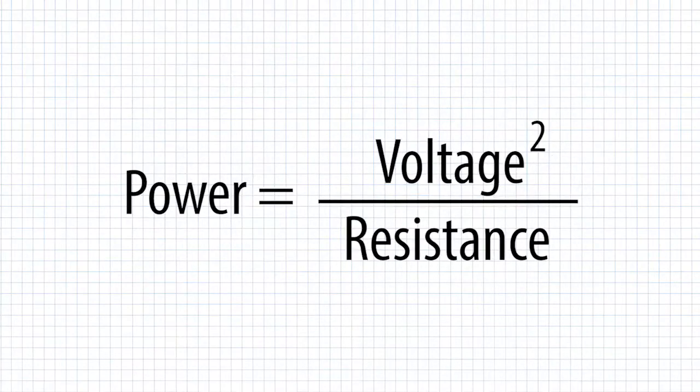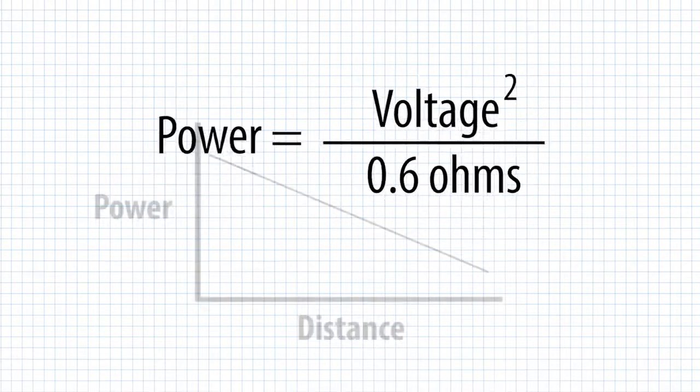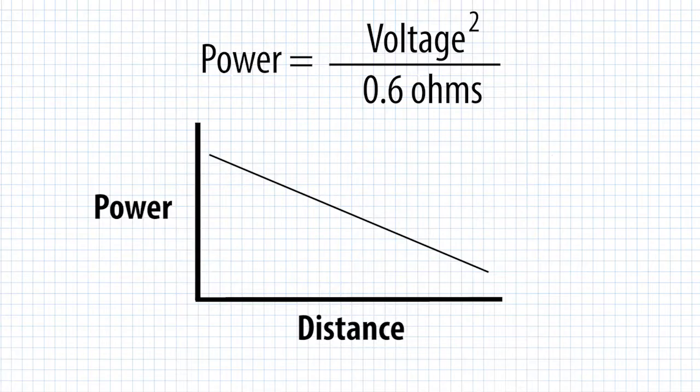After you've recorded all your data, calculate the power at each distance by using the formula power equals voltage squared divided by resistance. For resistance, you can use 0.6 ohms. Now graph the power values in relation to distance.